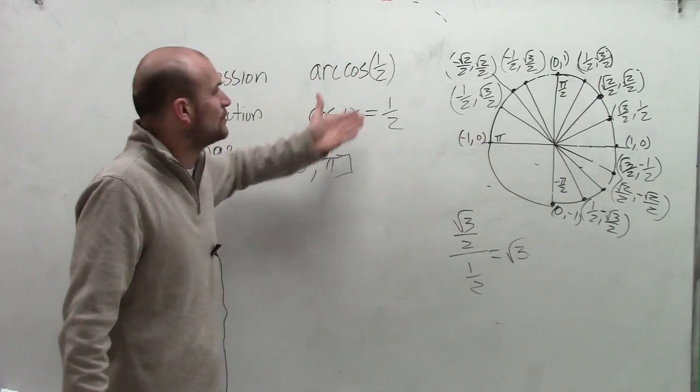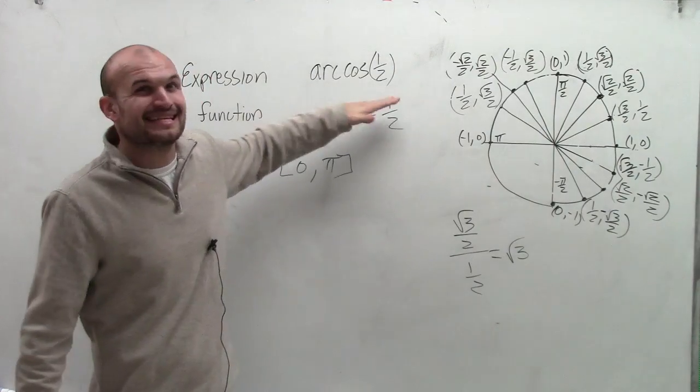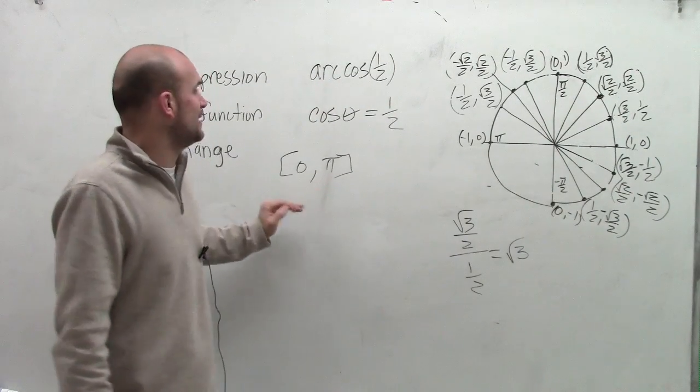So what it's saying is: the cosine of what angle equals 1 half? That's really what this is asking us. But then it has to fall within the range of 0 and pi.